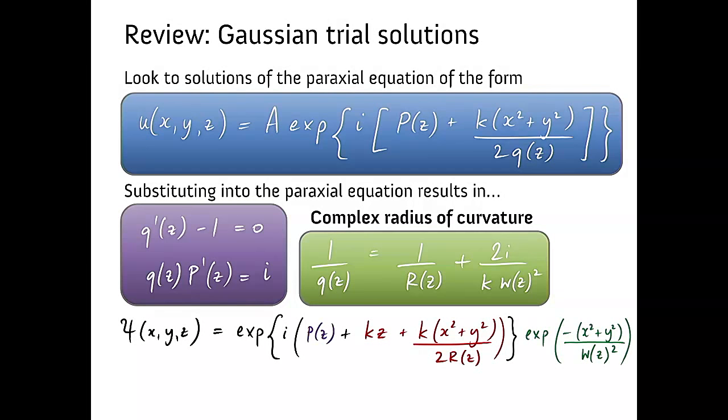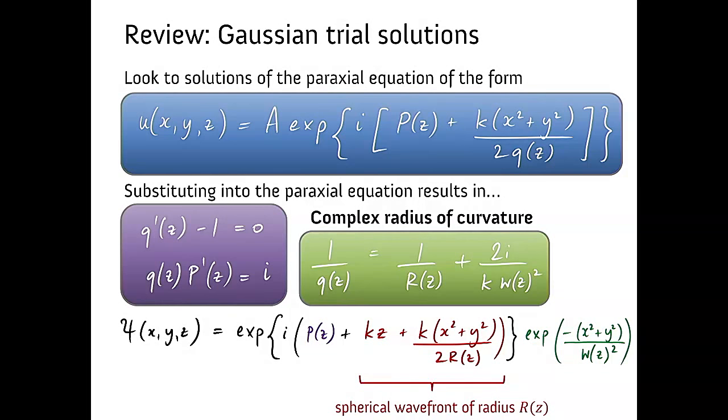Now in doing that, we substitute into the function U and we saw the benefit of making this complex radius of curvature. It's what recovered the spherical wave with a real radius of curvature which depends on Z and it also made our solutions no longer absurd. They have some spatial dependence and this is the amplitude profile which gives us this nice spot size.